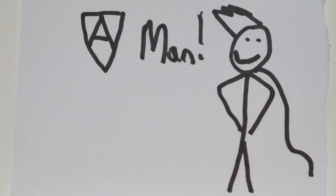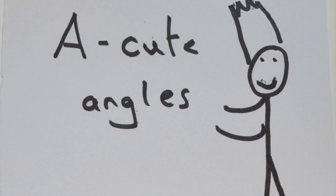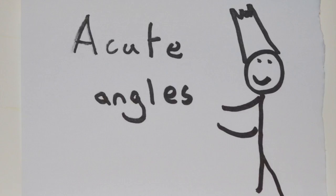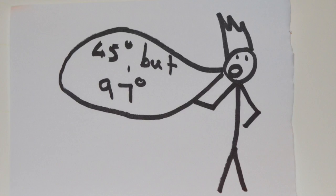And me, I will be telling you these. So to start off with, we have acute angles. These angles are usually less than 90 degrees, so to take an example, 45 degrees, but not 97.